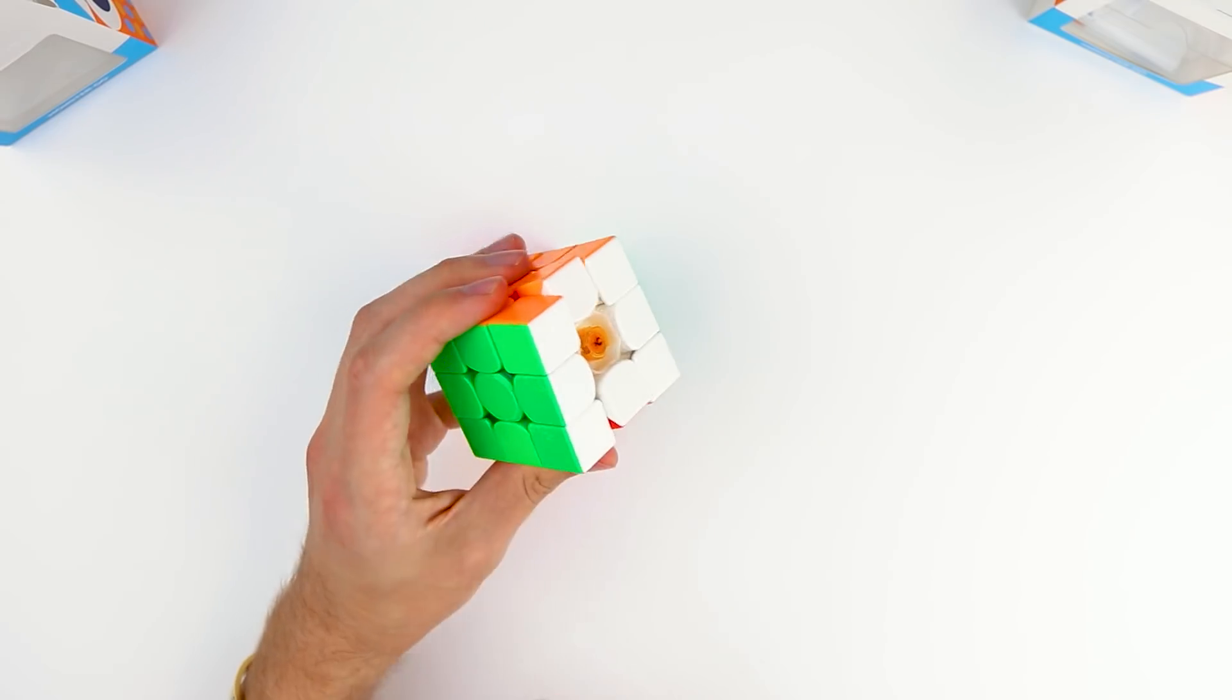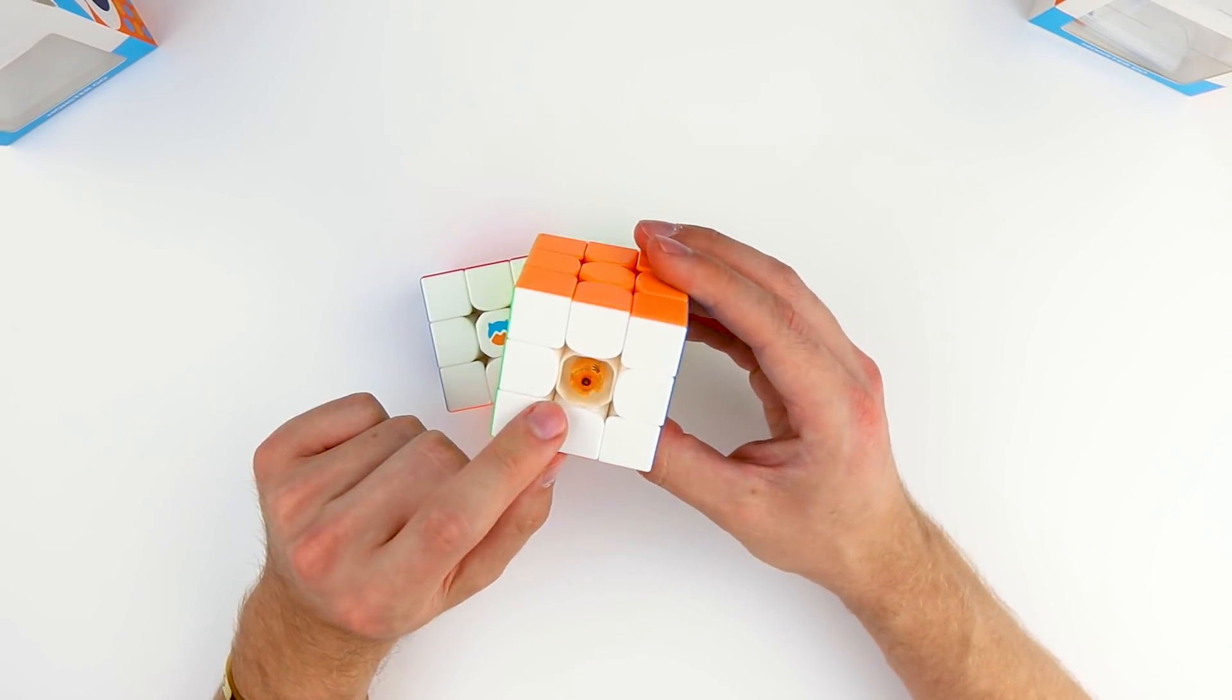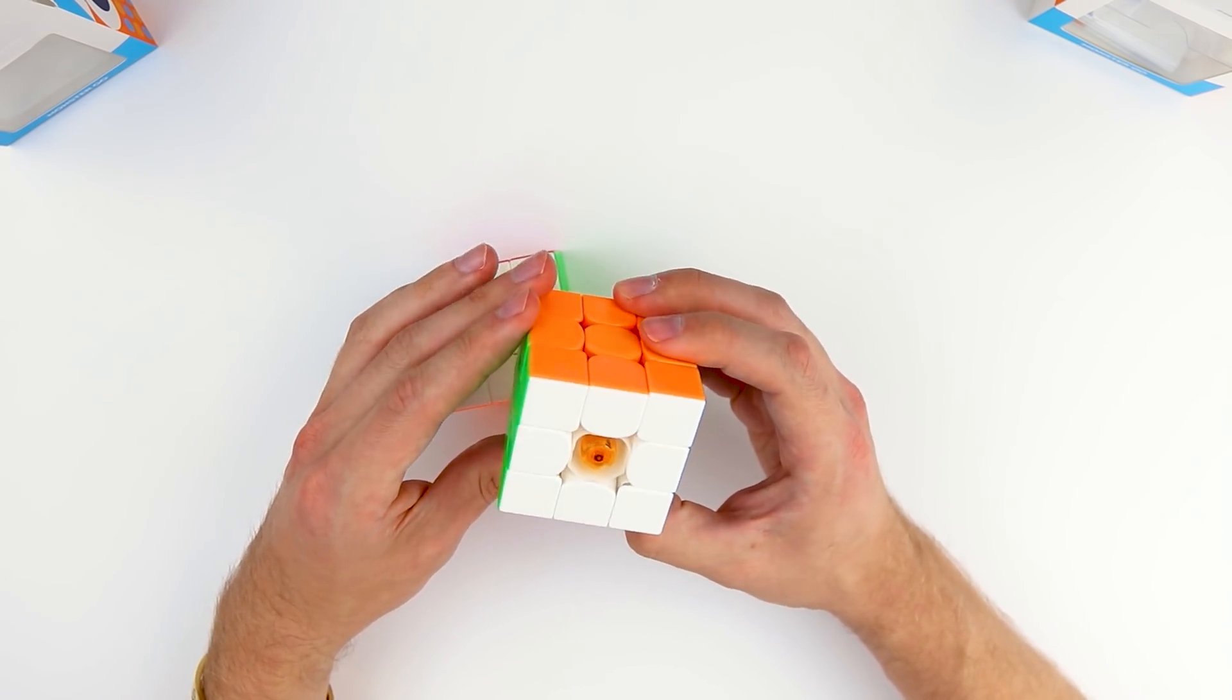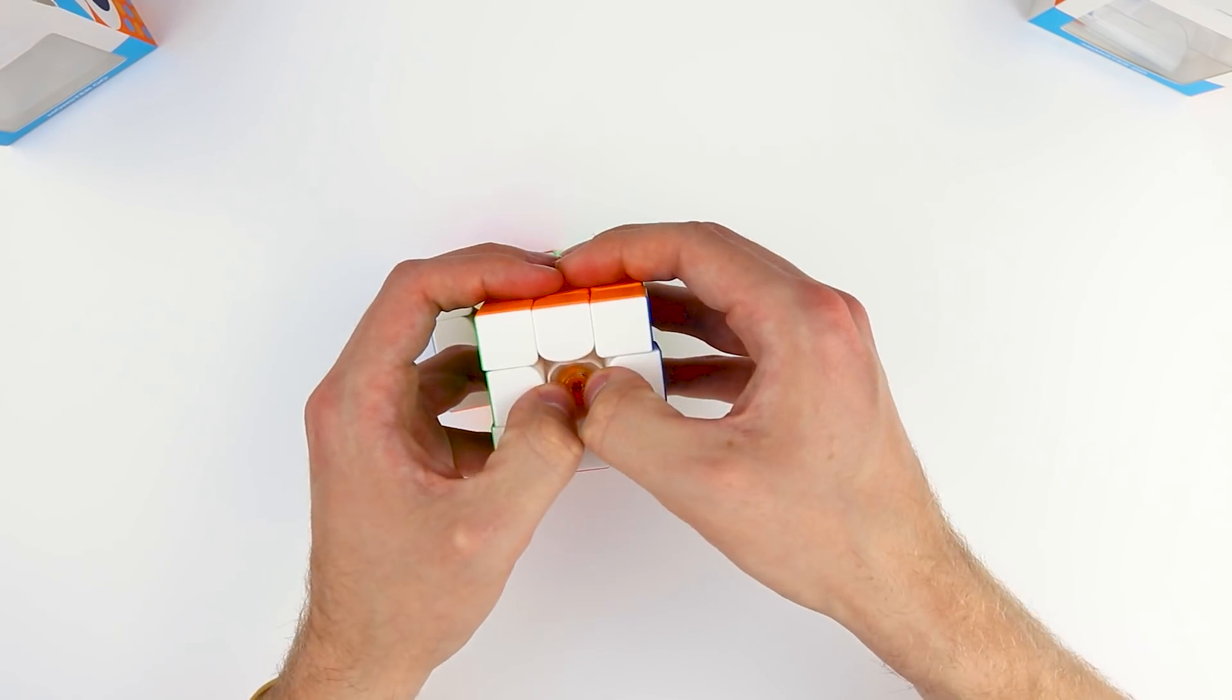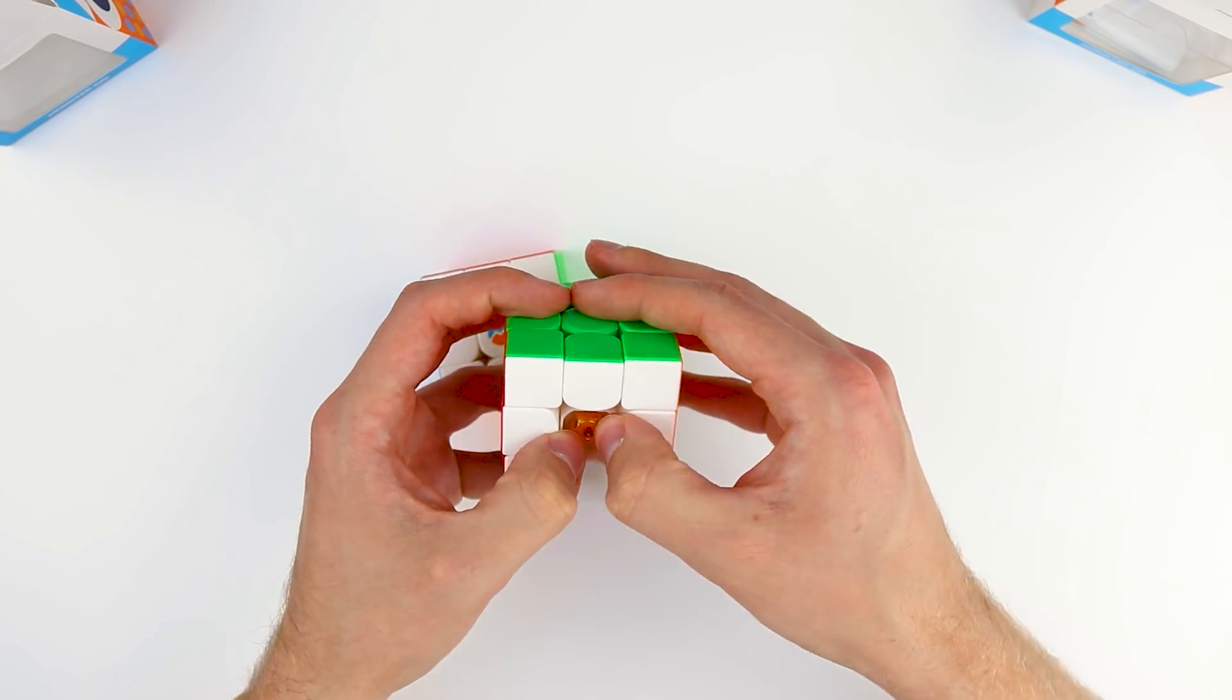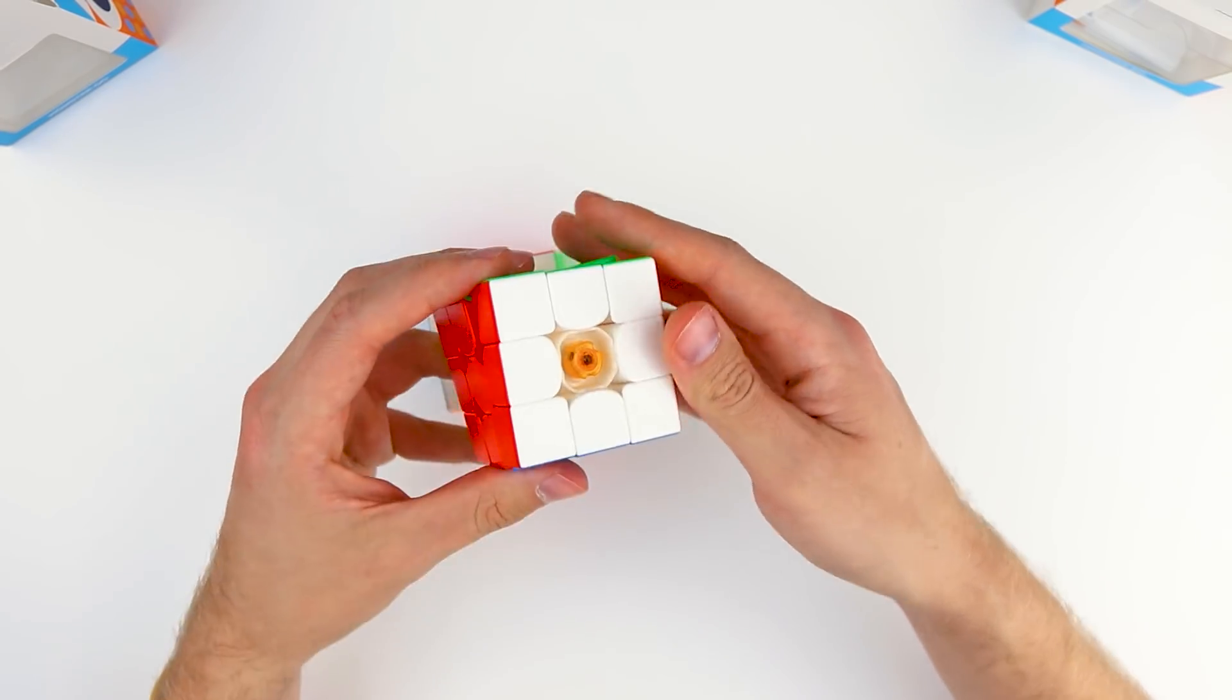Take a look underneath the center cap. We have an orange numerical GES with 0.6 and 0.8 settings. So, again, you don't need a tool for these. You can just easily depress and rotate with your fingers like that. So, really easy adjustment there.